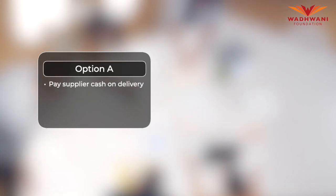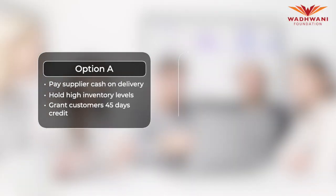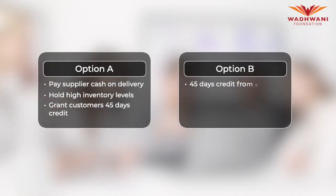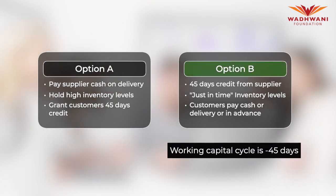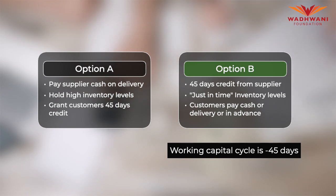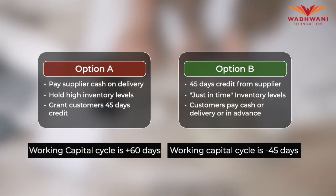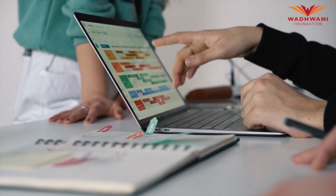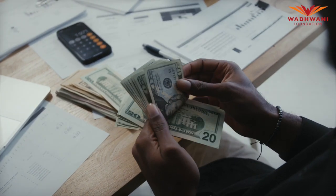The worst situation is where your supplier requires cash on delivery, you hold 30-60 days of inventory, and your customer asks for 45 days of credit. The best situation is where your supplier gives you 45 days of credit with just-in-time material delivery and your customer pays in advance. In that case your working capital is minus 45 days — you are holding cash worth 45 days of sales. In the first scenario, your working capital cycle is positive 60 days, meaning you need cash worth 60 days of sales. If you are selling 365 crores a year, you need 60 crores of cash to run the business, whereas in the best case you are sitting on 45 crores of cash.